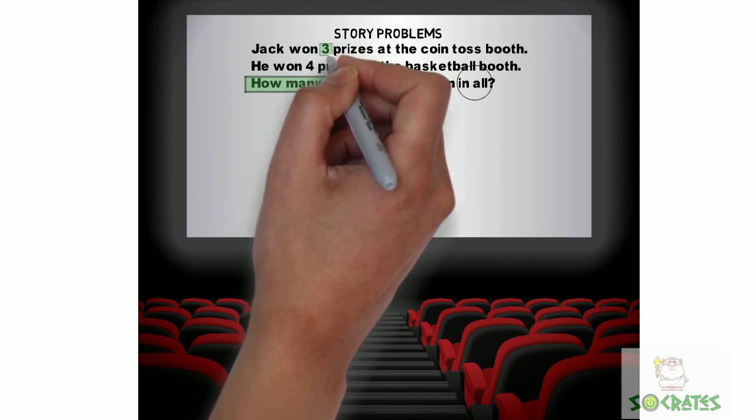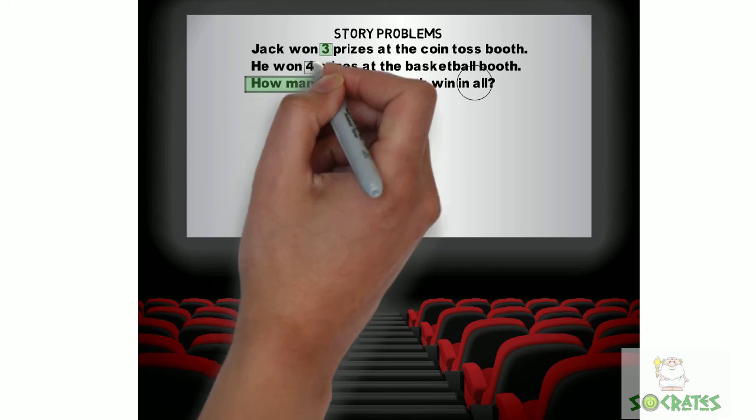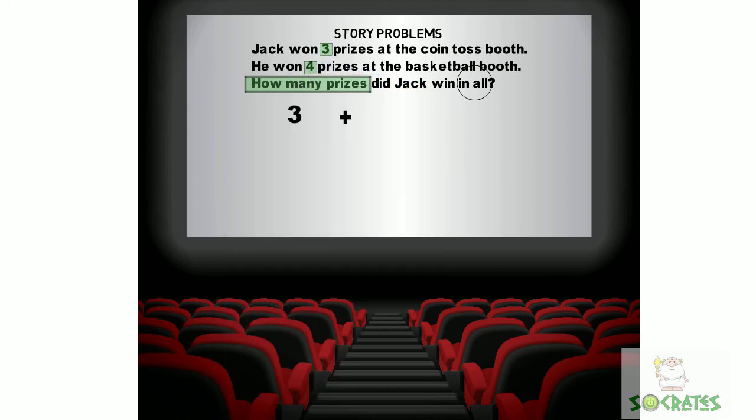And then we see that we have three prizes at the coin toss booth and four prizes at the basketball booth. Three plus four equals seven.